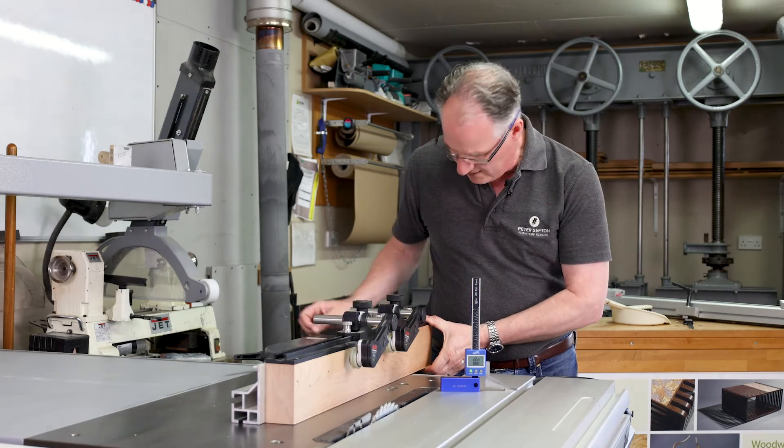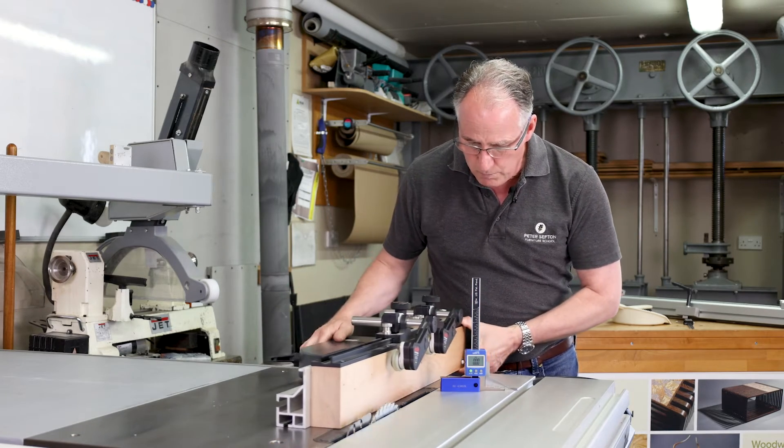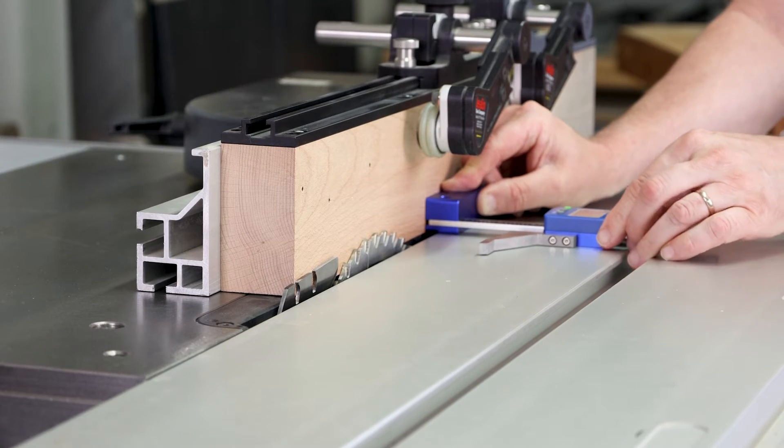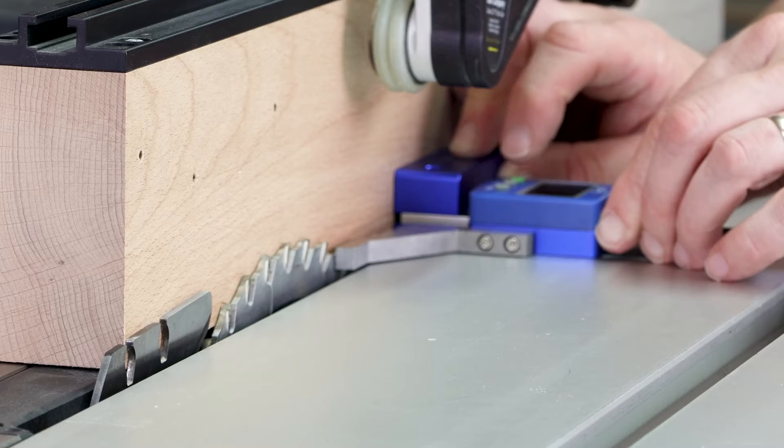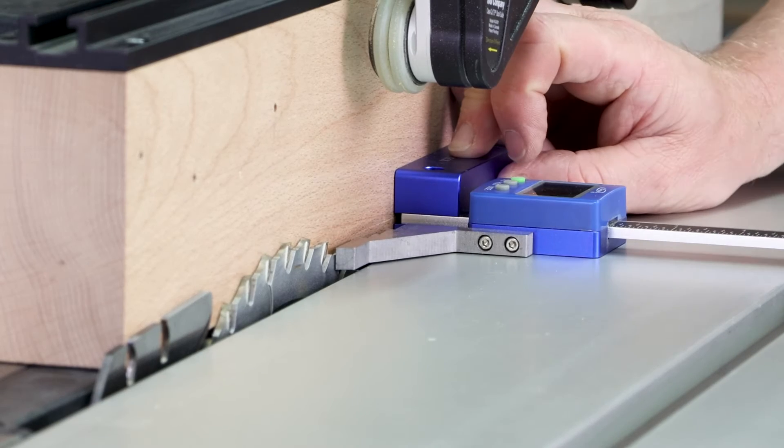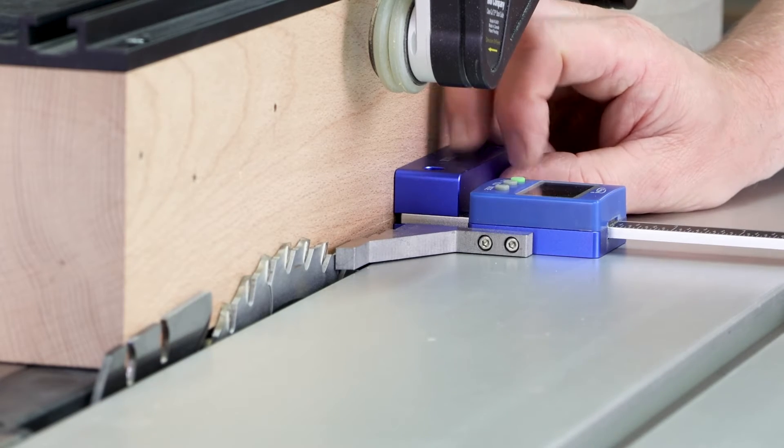If you bring your fence over to your blade, put your EZ-Check to the fence, put the tip of the EZ-Check to the blade and press zero. That's now basically measured the size of the blade.